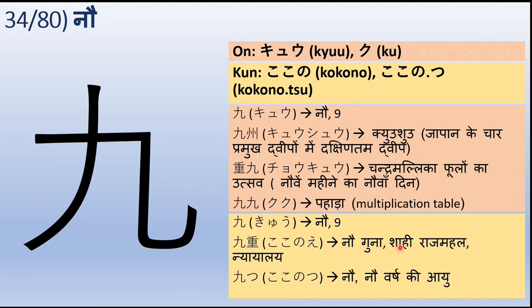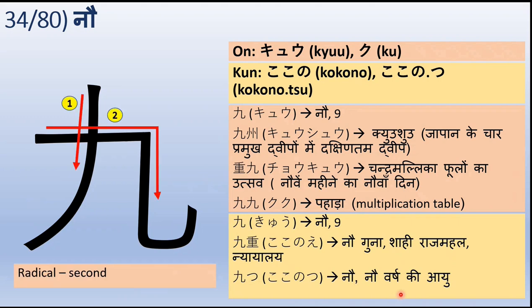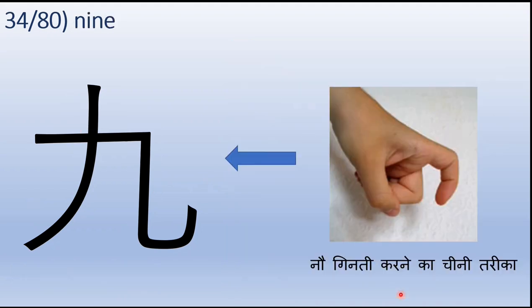Kyu kunyomi mein yaani nao. Aur Kokonoye — Kokonoye ka arth hai nao guna ya shahi raj mahal yaani imperial palace, yaani royal court. Aur Kokonotsu ka arth hai nao varsh ki aayu. Ye second radical se aaya hai aur ye iska stroke order hai — ye bhi do strokes mein likha jaayega. Ye phir se japani-chini ginti ka tariqa hai — is tarah se hum haath ko karte hain nao ko darshane ke liye, aur isi se is chinha ki utpatti hui hai.